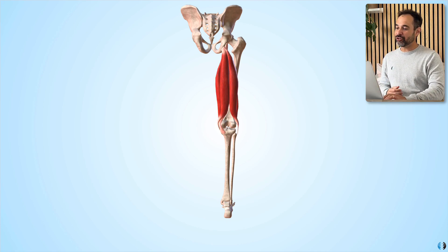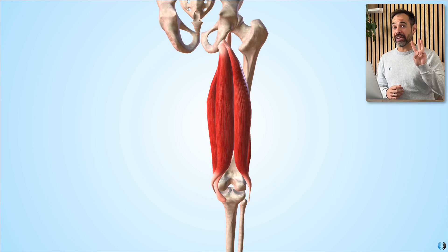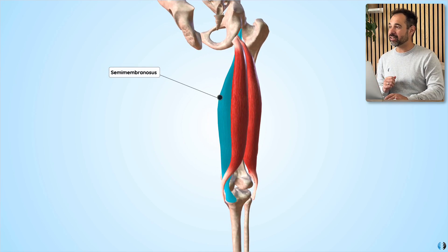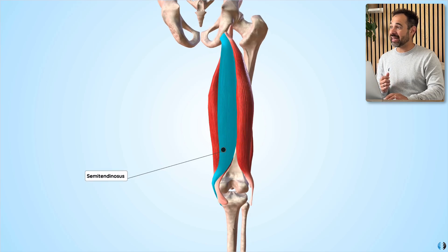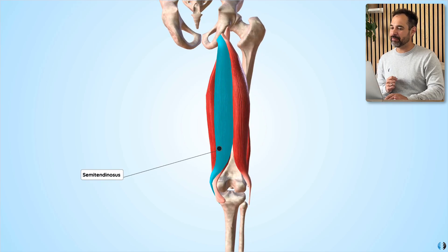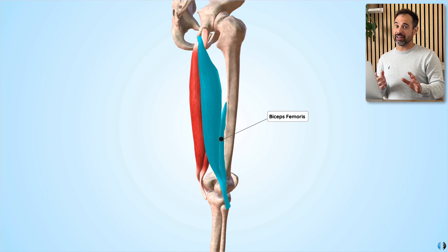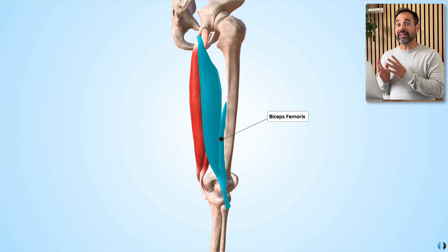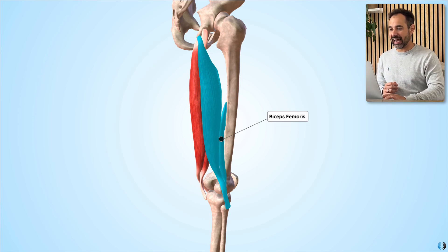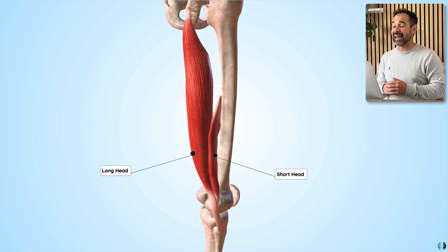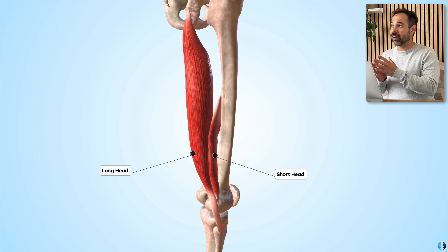There are three hamstring muscles: semimembranosus, the most medial of the three; semitendinosus in the middle; and biceps femoris on the lateral side. The reason it's called biceps is because it crucially has two heads — a long head and a short head — and both of these are located on the lateral side.